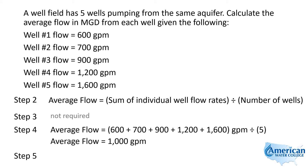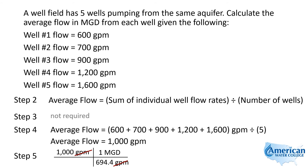Notice they want the flow in MGD. So in step five we convert those units of gallons per minute to units of MGD. We write down our 1,000 gallons per minute and use the equivalent — and this is worth memorizing — that there are 694.4 gallons per minute for every one MGD. So we take 1,000, divide it by 694.4, and that gives us an average flow of 1.44 MGD.